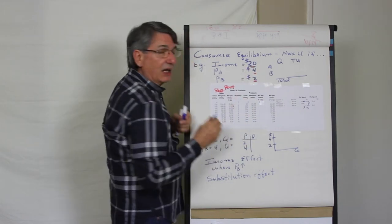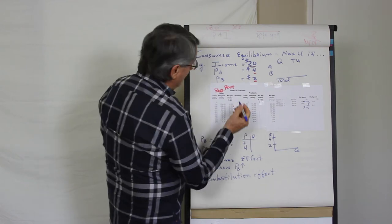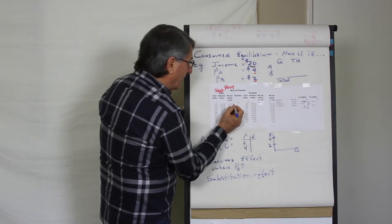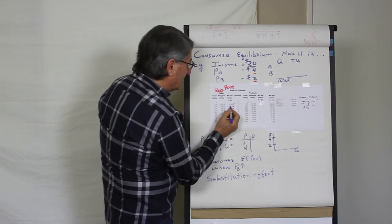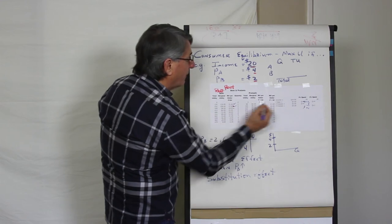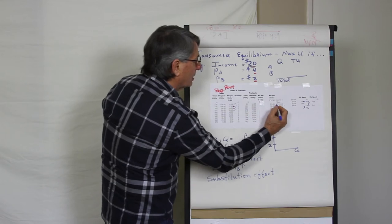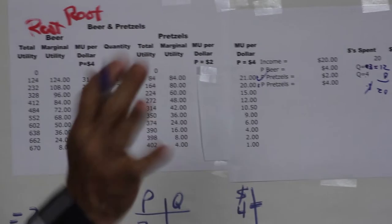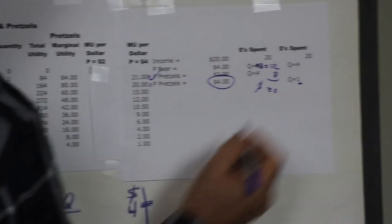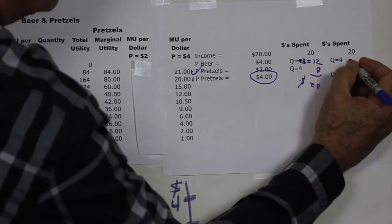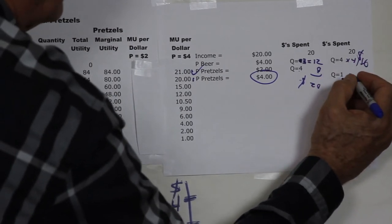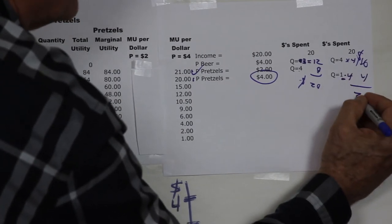So with $20 to spend now, how do you spend it? The first unit of pretzels gives 21 utils per dollar, the first beer gives 31 — buy beer. Then 27 versus 21 — buy beer again. Then 24 versus 21 — buy beer. Then 21 and 21 — buy pretzels. You've spent the money: 5 items each costing $4 equals $20. So when the price of pretzels goes to $4, you buy 1 unit of pretzels and 4 units of root beer: 4 times $4 is $16 plus $4 for one pretzel equals $20.